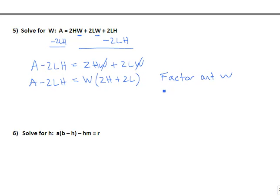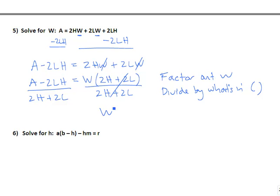Now once we factor out our w, your last step will always be to divide by what's in parentheses. So we're going to divide both sides by 2h plus 2l. So we get w equals A minus 2lh all over 2h plus 2l.